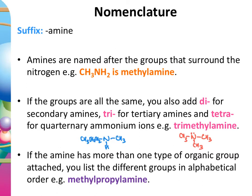Knowing how amine names work helps when you have questions about working out how many different isomers there are. If you know there's a nitrogen in the formula, you can think about the different lengths of alkyl groups and the different ways you could arrange them when working out what isomers a molecular formula might have.